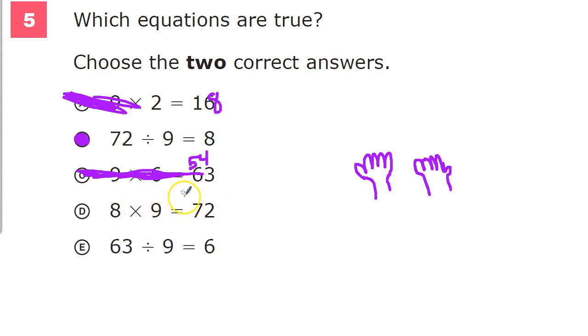8 times 9 is 72. I can check that. 1, 2, 3, 4, 5, 6, 7, 8. And this only works with the 9s, by the way. So I have 1, 2, 3, 4, 5, 6, 7 in front. And then afterwards, I have 1, 2. So that is a correct answer.